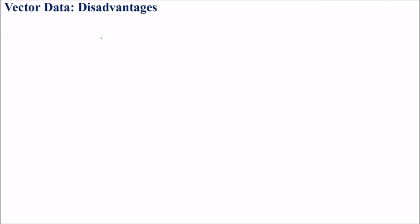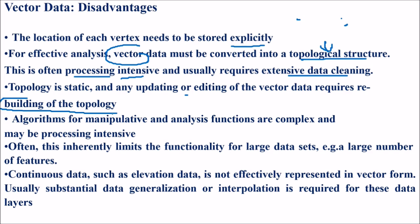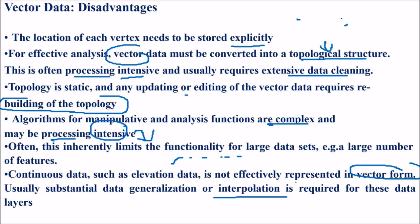Vector data has disadvantages too. The location of each vertex — point, line, polygon — needs to be stored explicitly. For effective analysis, vector data must be converted into a topological structure, which is processing-intensive and requires extensive data cleaning. Topology is static; any updating or editing requires rebuilding topology. Algorithms for manipulation and analysis are quite complex and processing-intensive, limiting functionality for large datasets. Continuous data such as elevation is not effectively represented in vector form, and substantial data generalization or interpolation is always required.